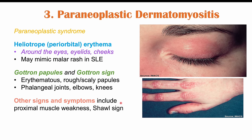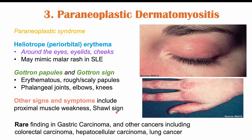We can also see some other signs and symptoms of this paraneoplastic syndrome, including proximal muscle weakness and shawl sign — a rash around the neck. This is again a rare finding in gastric carcinoma, and we can also see it in other types of cancers including colorectal cancer, hepatocellular carcinoma, and lung cancer as well. This paraneoplastic syndrome seems to be related to certain autoantibodies that cancer cells are producing.